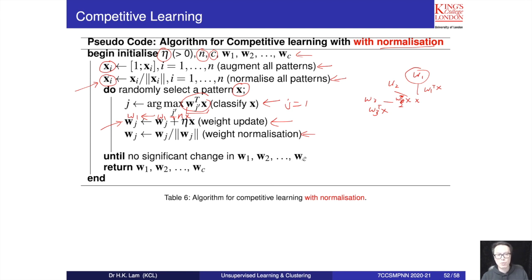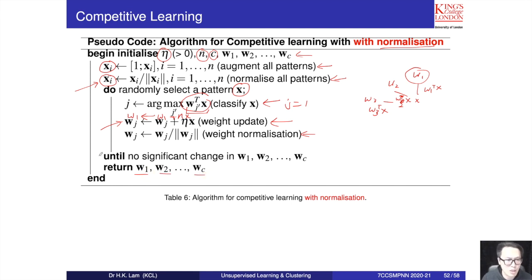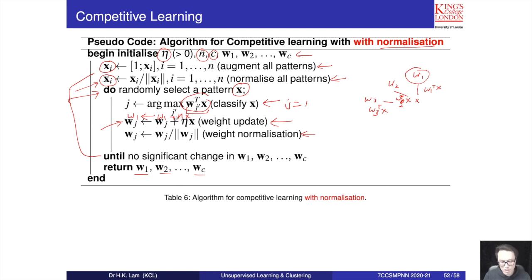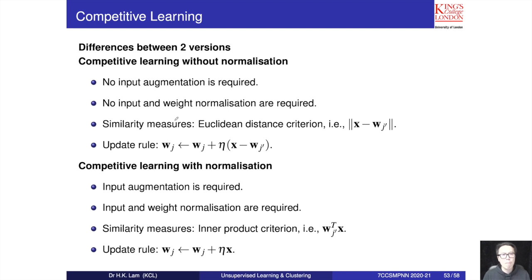We then assign w1 = w1 + eta * x, where x is the randomly picked sample, so we only update w1. After updating w1, we normalize: wj divided by the L2 norm of wj. We then check whether there is any change in w1 through wc; if no change, we stop and return the cluster centers as the solution; otherwise, go back to the loop to pick another pattern.